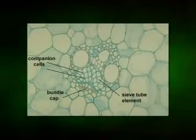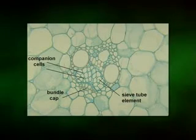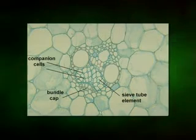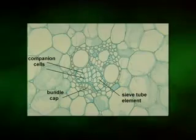Companion cells and contiguous sieve tube members form sieve tube–companion cell complexes. In collection phloem, companion cells in the veins of leaves function in the transfer of assimilates from photosynthetic tissues and bundle sheaths into the sieve tubes. Because of their intimate association with sieve tube members, the companion cells also play an important role in maintaining the viability and long-distance translocation system of the enucleate sieve tube members by providing them with proteins, including informational signaling molecules, ribonuclear protein complexes, as well as adenosine triphosphate.